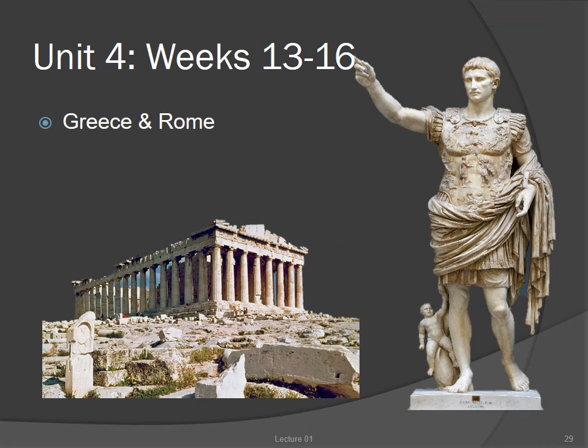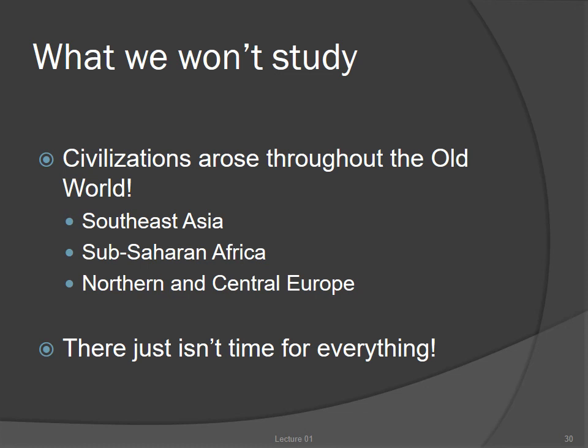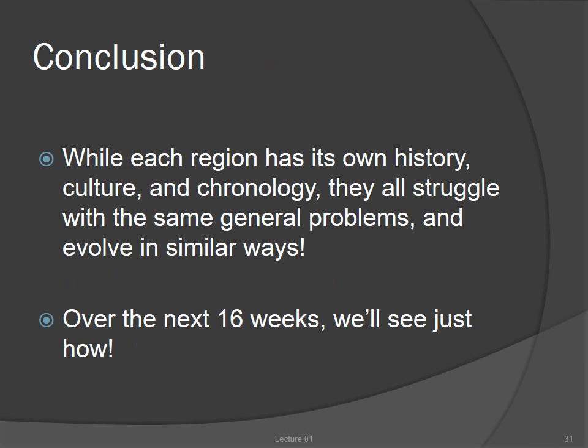Finally, in Unit 4, we'll shift back to the West and examine the origins of European civilization by looking at Ancient Greece and Rome — the places where our own tradition first started to differentiate itself from their predecessors. Civilizations developed in other parts of the Old World as well, in Southeast Asia, Sub-Saharan Africa, and Northern and Central Europe, but unfortunately there's only so much time in a semester, and we'll have to pass those regions by to focus on the larger, more influential civilizations. Cultural developments were not synchronized across such a large area as the Old World, but the most surprising lesson of archaeology is that, despite how widely separated people are in time and space, cultures all wrestle with the same sorts of problems, following the same general developmental trends across thousands of years of history.